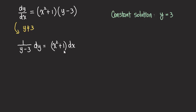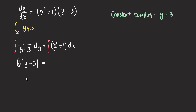Now we can integrate both sides of this equation. On the left-hand side, we are going to get the ln of absolute value of y minus three. On the right-hand side, we can integrate x squared plus one — this is easy, it's a polynomial. Using the power rule, we get one over three x cubed plus x plus k, where k is a constant.